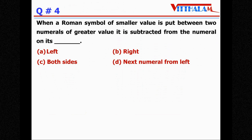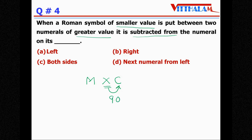Question Number 4: When a Roman symbol of smaller value is put between two numerals of greater value, it is subtracted from the numeral on its — left, right, or both sides? For example, take M and C as greater values, and put smaller value X between them: MXC. This X is subtracted from C, the numeral on its right side. So X means 10 subtracted from C (100) = 90, and M means 1000. So MXC = 1090.